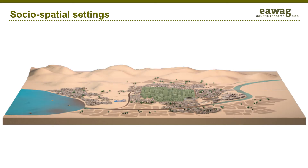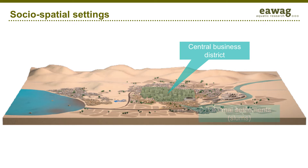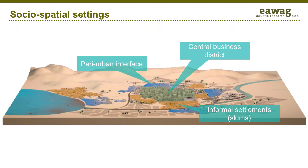In many cities of Africa and Asia, urban neighborhoods can be roughly categorized as follows. First, well-planned areas including city centers and economically better-off neighborhoods. Second, informal settlements or slums with high population densities and poor infrastructure. And third, rapidly growing peri-urban areas on the edge of many towns and cities.